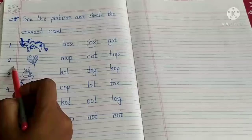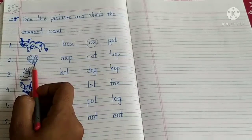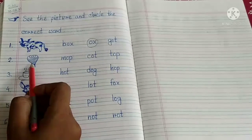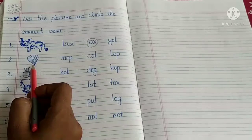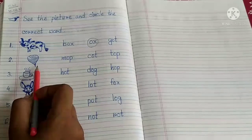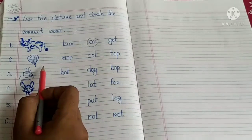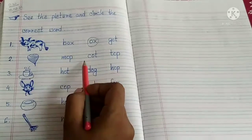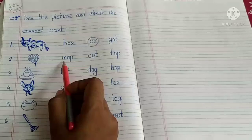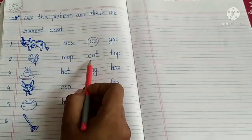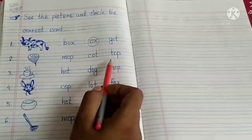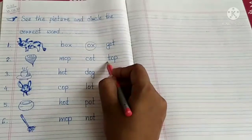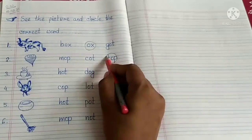Now, number 2. What is this? This is a top, right. So tell me, what is the spelling of top? T-O-P, top. Let's find the word from here. Mop, cot, top. So here we got top. Let's circle it.